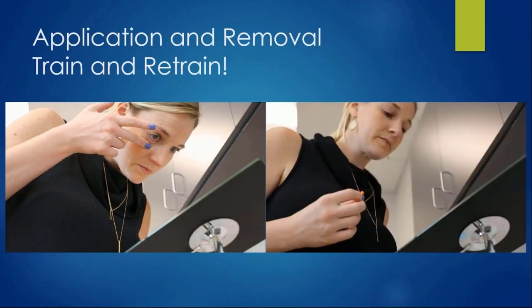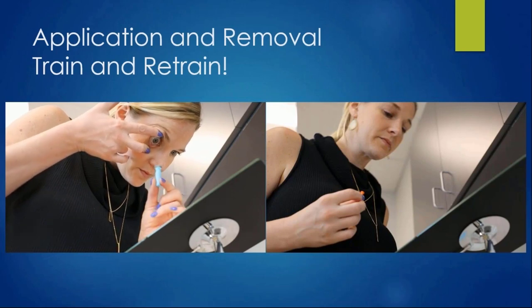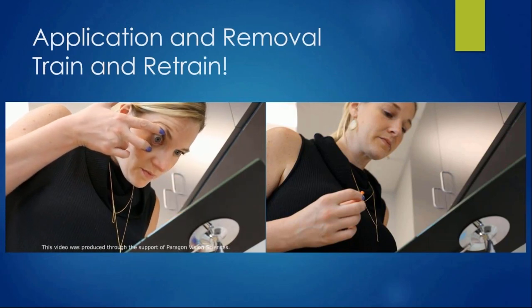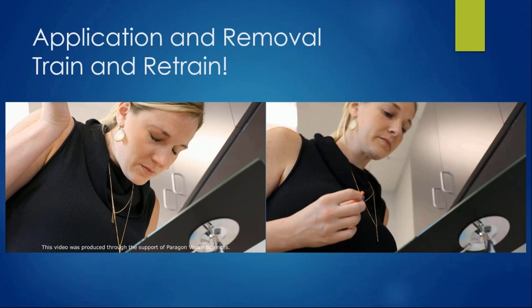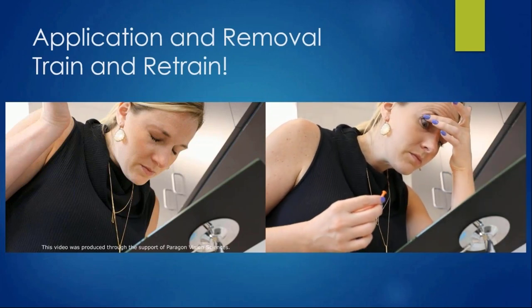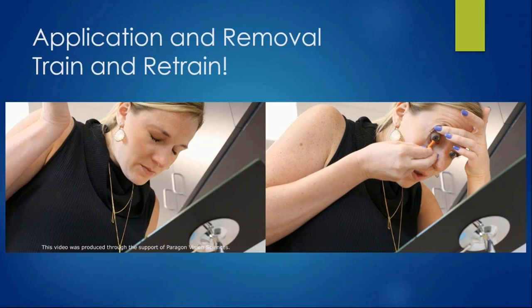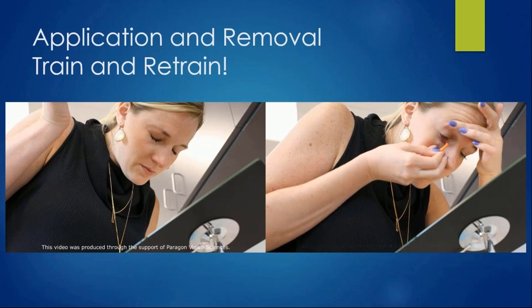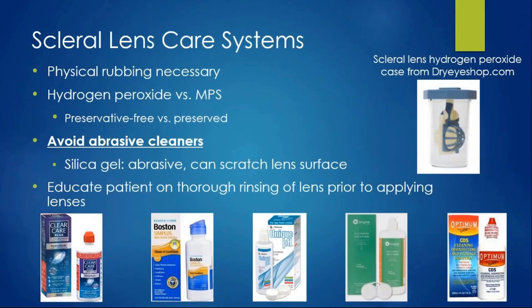If everything looks good and vision is acceptable, start the application and removal training. The goal is for the patient to apply the lens smoothly. For removal, patients should hold the upper and lower lids on their own, place the small plunger at six o'clock or twelve o'clock—just not in the middle—and break the suction. Spend the majority of your time walking them through this. Once they've completed A/R training about three times on their own in office, you're ready to discuss lens care systems.